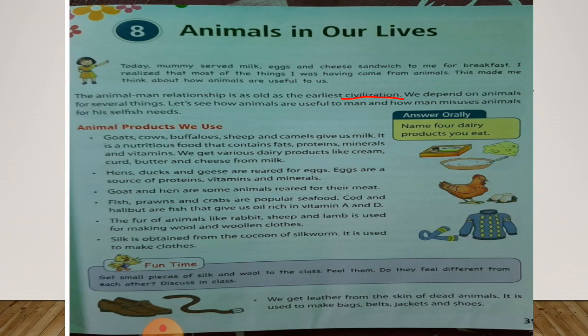Good morning class. We are reading Chapter 8 in EVS and the name of this chapter is 'Animals in Our Lives.' In the previous classes we have seen that Riya was telling about the food which is obtained by animals, and we have seen some points of animal products we use. Now in this class we are going to see some other remaining points of animal products we use. Students, open page number 39 in your EVS book.